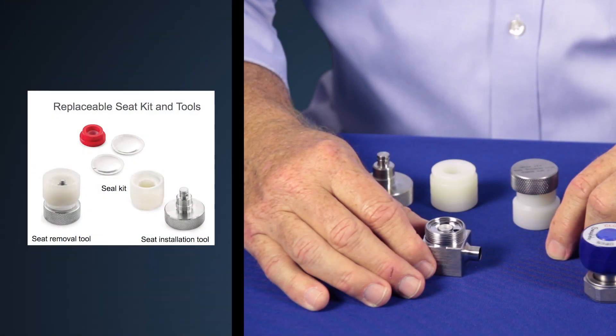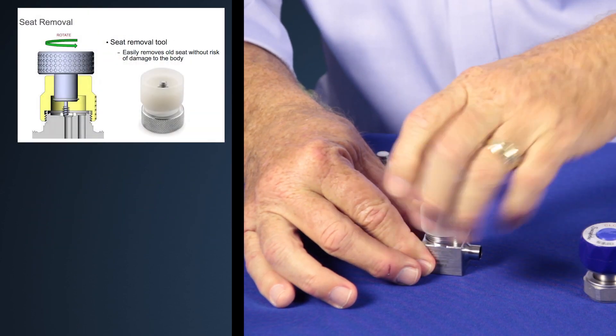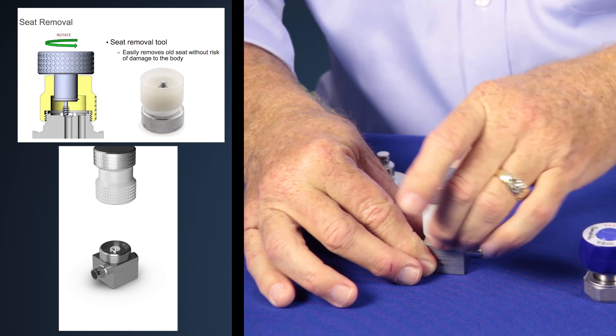Now you're able to remove the old seat from the body. You attach the seat removal tool to the body making sure that it tightens fully against the bottom of the body.